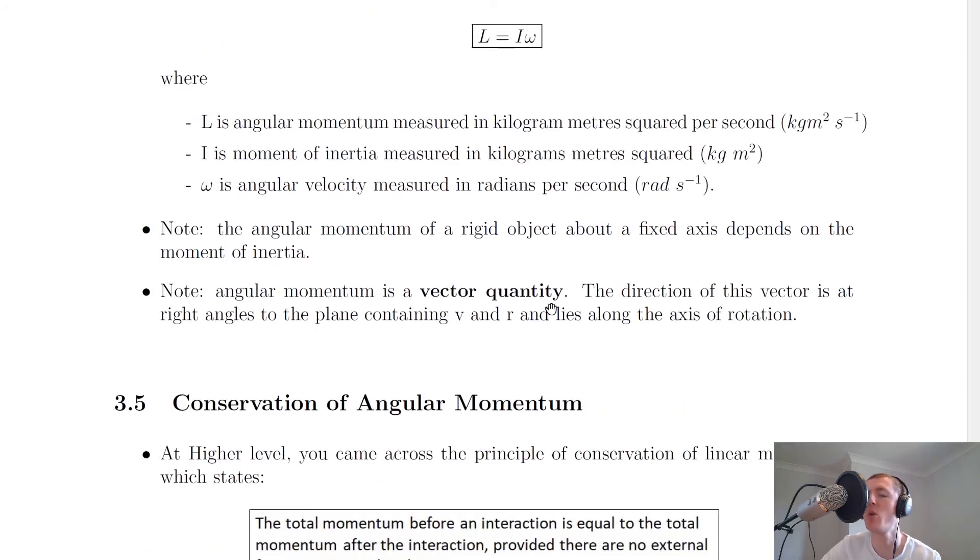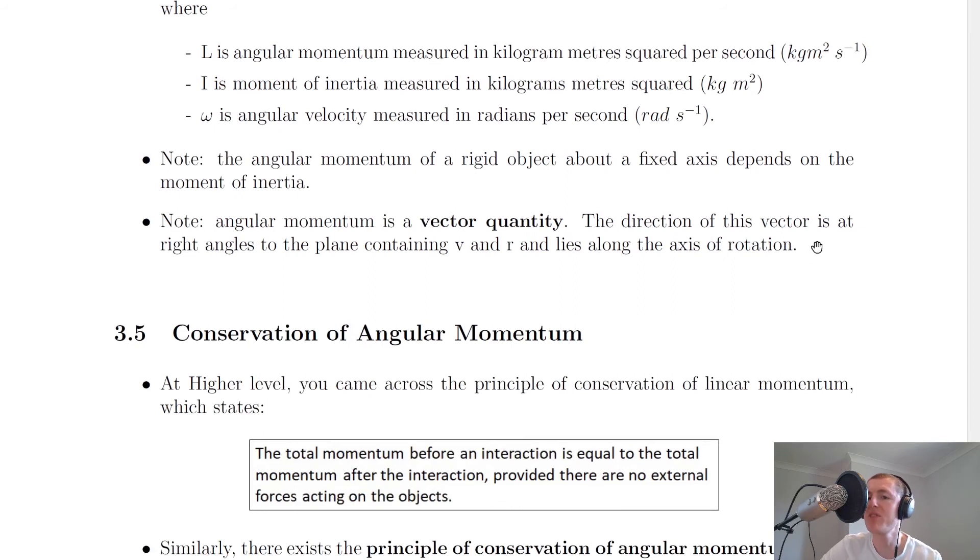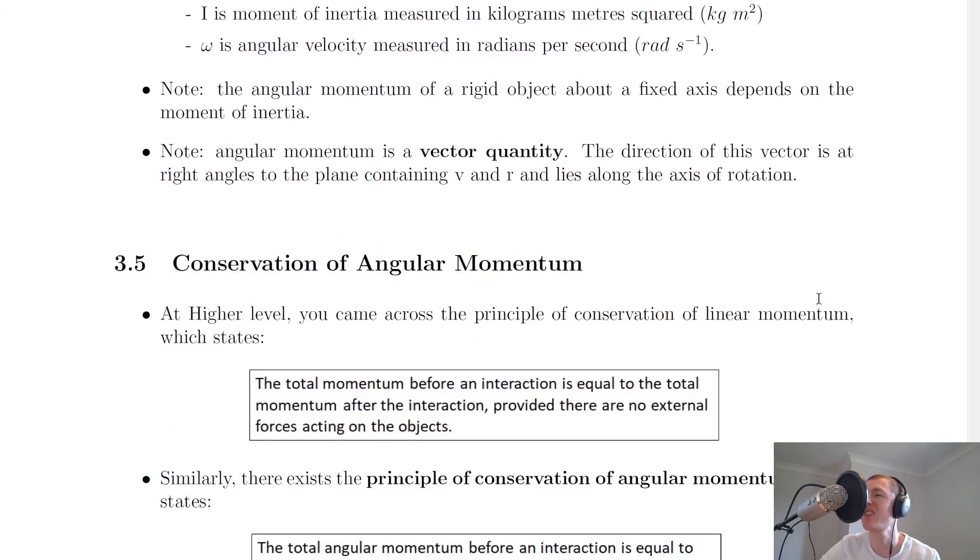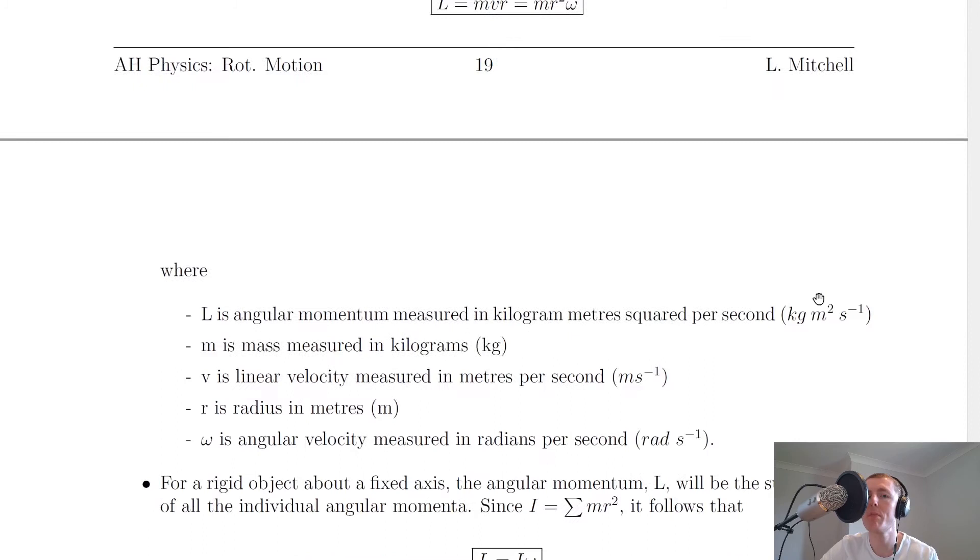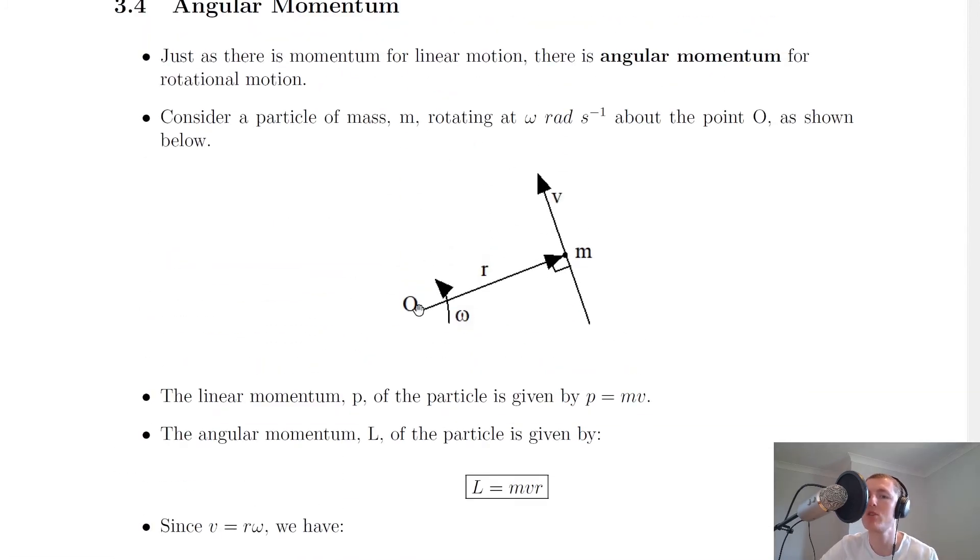And angular momentum is a vector quantity. So just like torque, acceleration, force and so on, angular momentum will have both a magnitude and a direction. The direction of this vector is at right angles to the plane containing v and r and lies along the axis of rotation. And this is actually the same direction that torque takes along the axis of rotation. So going back to our little picture of the motion, this would be going through the origin point there through the axis of rotation perpendicular to both v and r.